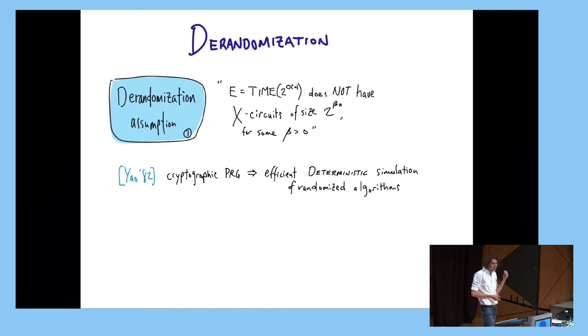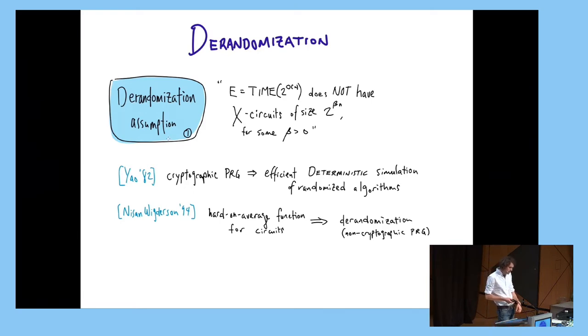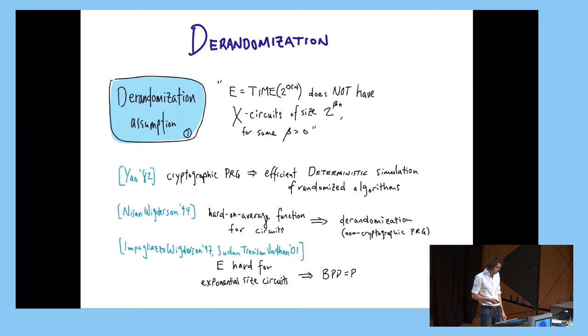Derandomization, just a brief history. In the 80s, Yao showed that cryptographic PRGs are sufficient not just for privacy purposes, but for deterministically simulating randomized algorithms. Nisan-Wigderson observed that these cryptographic PRGs are too strong. They work on arbitrary polytime algorithms, and they have very strong indistinguishability guarantees, negligibly indistinguishable, and you can relax both of these things. And they showed that if you relax both of these things, if you have just a hard-on-average function for circuits, you can derandomize. And later, it was shown that you don't actually need this hard-on-average, you can actually start from a worst-case assumption. In particular, this assumption at the top, where X is just your standard circuits. And this will be sufficient to derandomize BPP. These assumptions have appeared in lots of work, derandomizing all sorts of things.